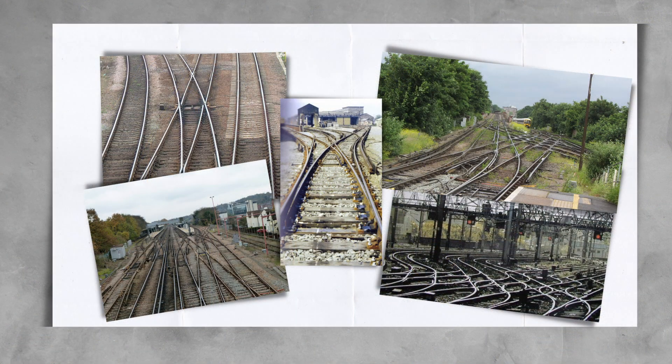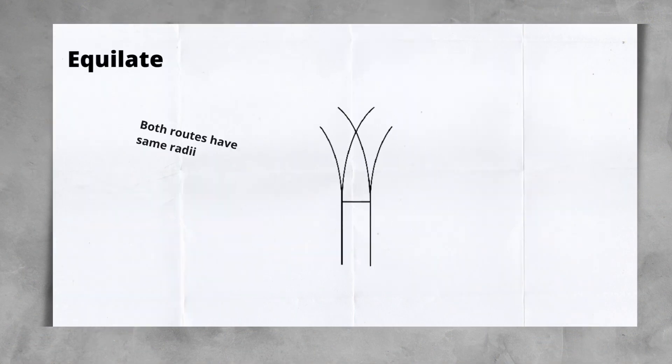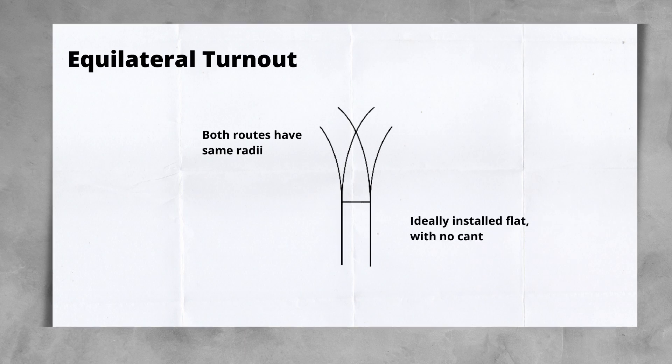First up, we have the split or equilateral turnout. This is essentially a contra-flexure turnout, but the important thing to remember about this layout is that the radii for both routes is the same. In a standard contra-flexure turnout, the design is optimised for the through route, sometimes leading to compromises on the turnout route. In a split, both are designed the same, removing the ability to optimise one route over the other. It also drives this junction type to ideally be installed flat, with no cant.